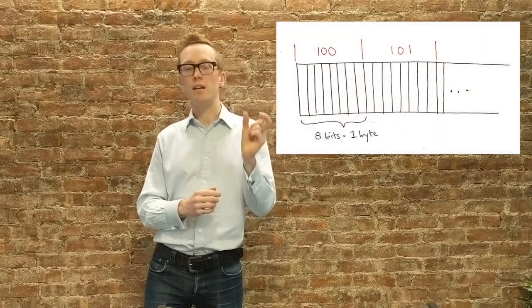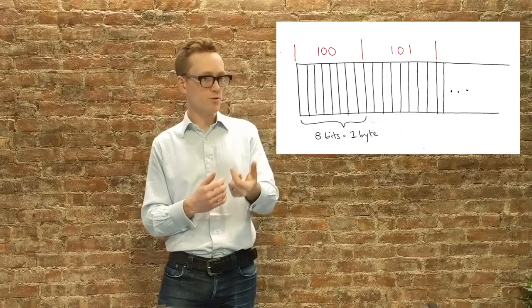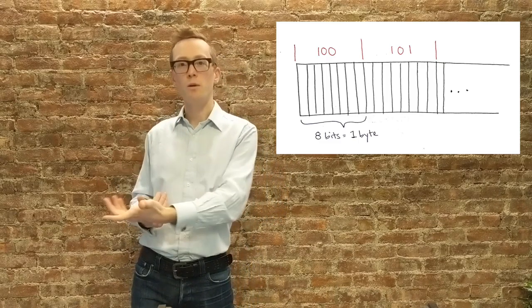Each byte is given a number which is its address representing its sequence in memory. So for example, byte 100 is followed by byte 101 which is followed by byte 102. If this is sounding a little bit like an array, that's because it is. An array is really just an abstraction on top of a big chunk of contiguous memory that you can then access by index.